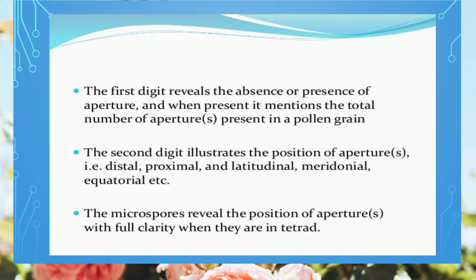Before dispersal, pollens are usually in association with other pollens. If they are in groups of two, a single line mark appears — a monolete mark. If in groups of three, we call it a triad. The mark indicates the pollen was in association with two more pollens. In the case of a tetrad, a trilete mark is formed, indicating the pollen has separated out from the tetrad grouping.